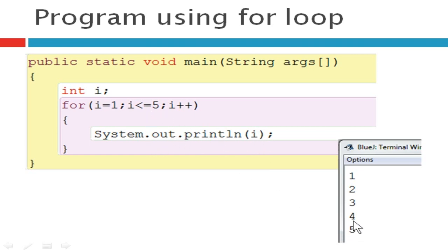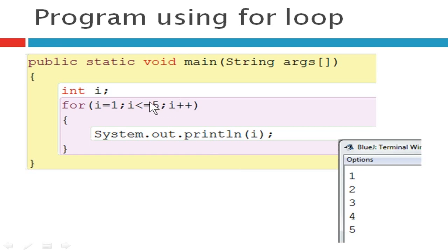Continuing, after printing 4, it increases the value of i so it becomes 5. Now 5 is less than or equal to 5 — it is not lesser than but it is equal to 5 — so it enters inside and prints 5. After 5, i is increased by 1 so it becomes 6. It then checks the condition: 6 is not less than and not equal to 5, so the condition is false and it comes out of the loop.